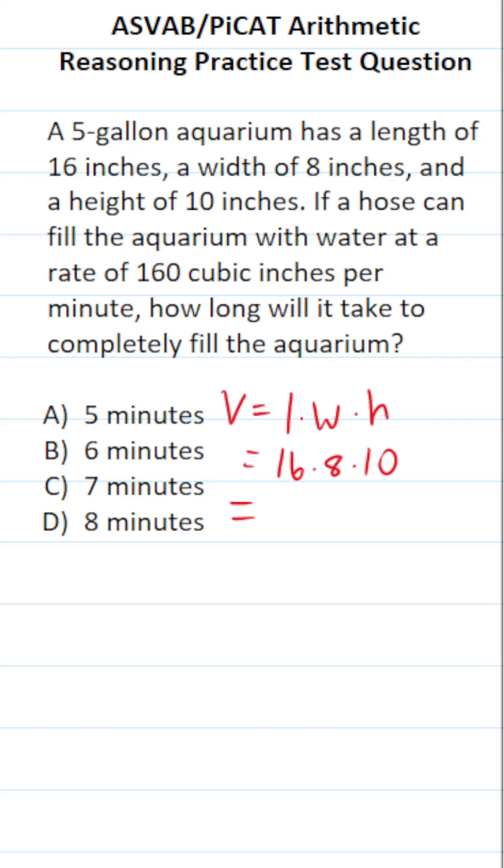So all we're going to do is multiply these three things together. If you want to do it the easy way, you could do 16 times 10, which is going to be 160 times 8. And I'm going to do this part off to the side so as not to make any simple mistakes here.